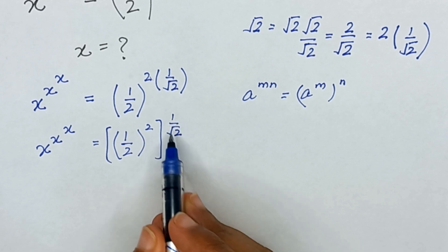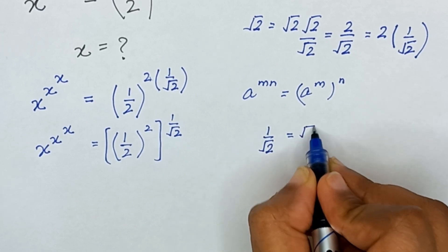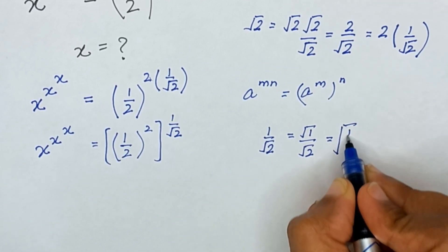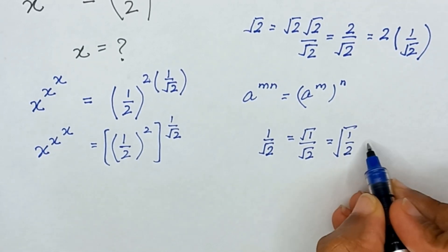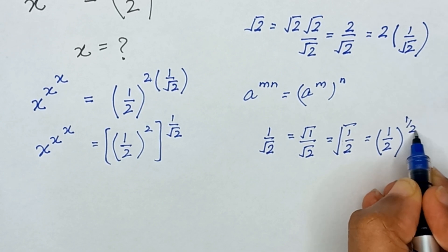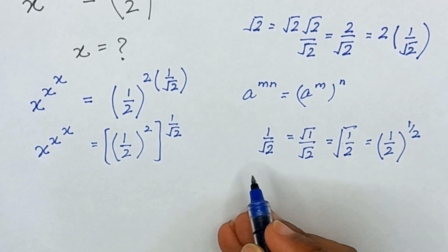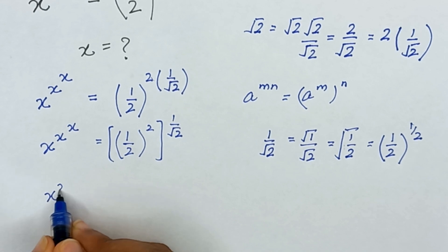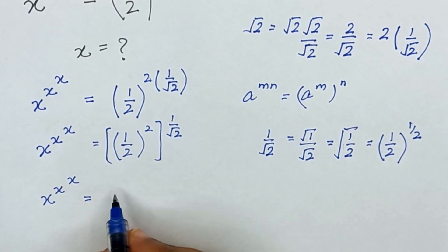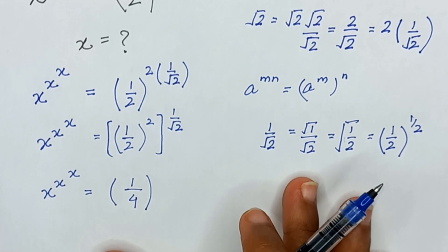Here we have power 1 divided by square root of 2. I can write 1 divided by square root of 2 as 1 divided by 2 raised to the power 1 divided by 2, since the square root is the same as power 1 divided by 2. So it will become: x raised to the power x raised to the power x is equal to 1 divided by 2 squared — which is 1 over 4 — raised to the power 1 divided by 2.